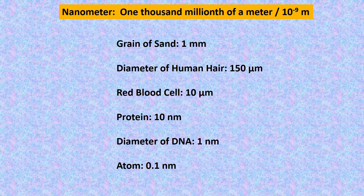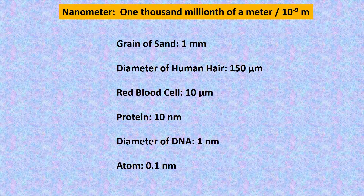Let us look at the scales now. A nanometer is one thousand millionth of a meter, or 10 to the power of minus 9 meters. For example, a grain of sand is of the order of 1 mm size, the diameter of human hair is 150 micrometers, red blood cells are 10 micrometers, proteins are 10 nanometers, the diameter of DNA is about 1 nanometer, and an atom is about 0.1 nanometer.